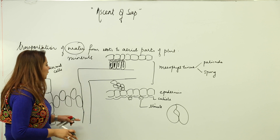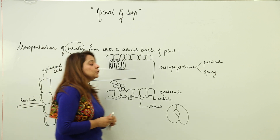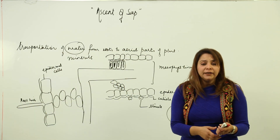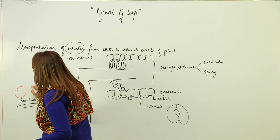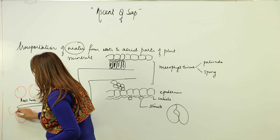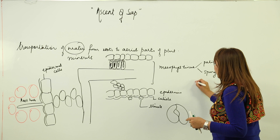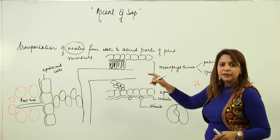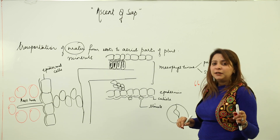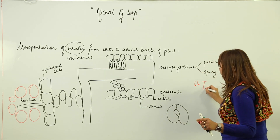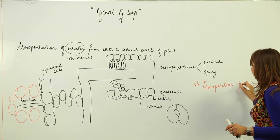The xylem vessel of the root is interconnected with the xylem vessel of the leaf. The factor responsible for the movement of water and minerals from root to the aerial parts is the mechanism called transpiration pull.